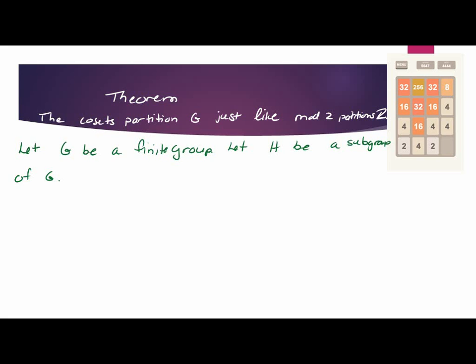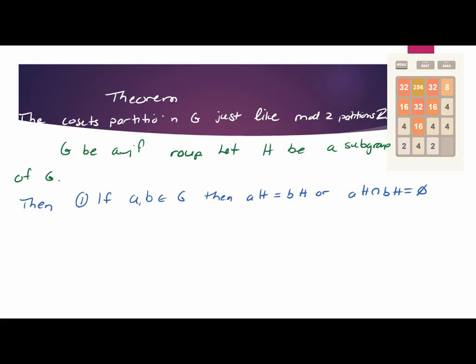So if you have G as a finite group and H as a subgroup of G, then if A and B are in G, A H and B H are either the same, like you have a duplicate coset, or they're completely disjoint. So that's the same as 0 and 1, the box 0 and the box 1. Either there's two elements in there that are exactly the same, or they're in completely separate sets.